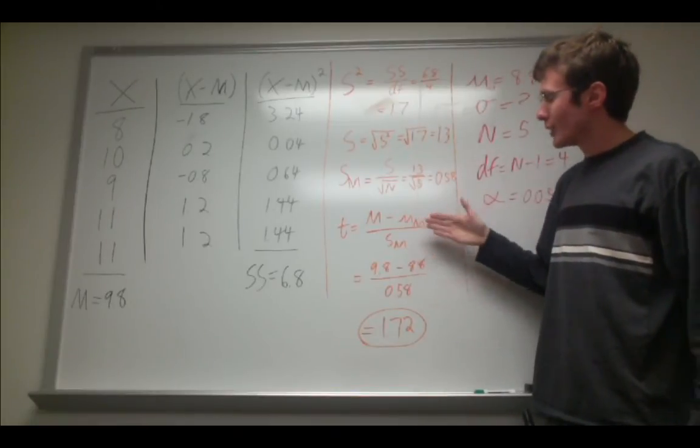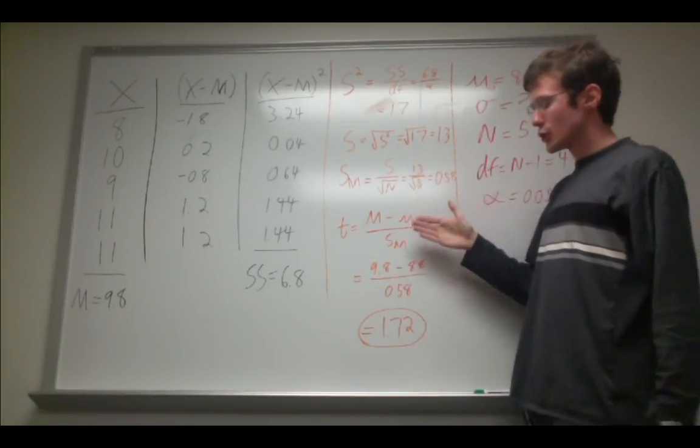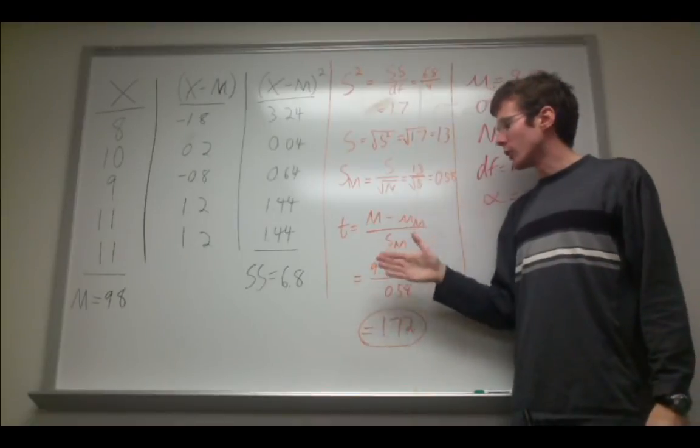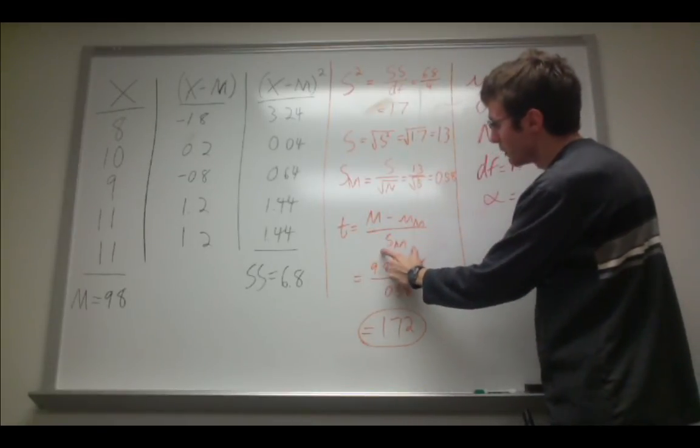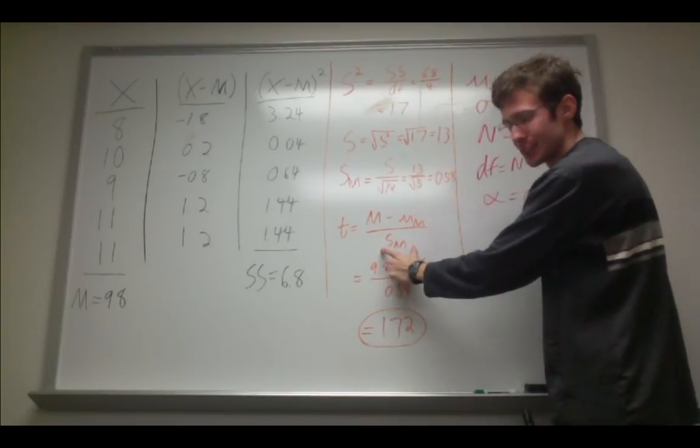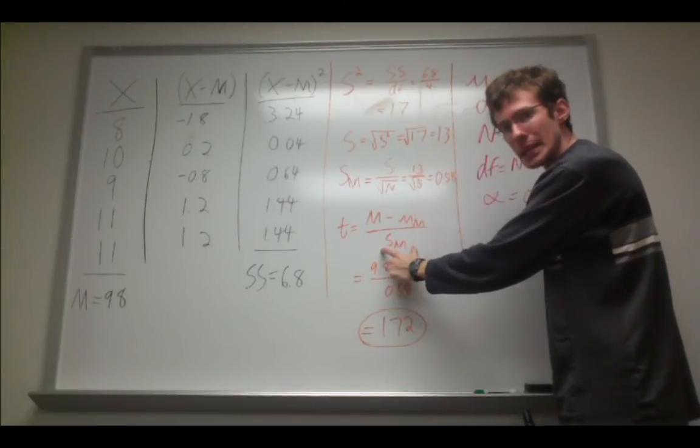This last step to calculate the t-value, this should look very, very similar to calculating a z-score, or a z-statistic. And it is. We simply subtract the population mean from our sample mean, and we divide that by our estimated standard error of the mean. So we're getting our difference from the population mean in terms of standard error, and that is our t-score, t-value, t-statistic, whatever. And we get a value here of 1.72.